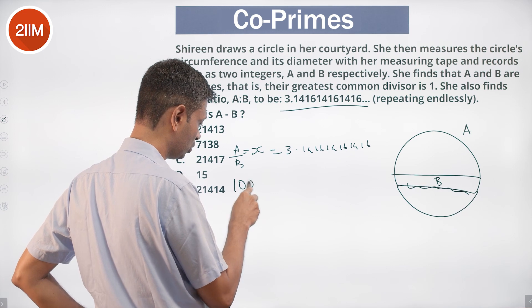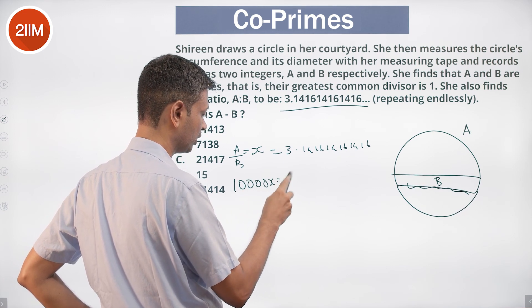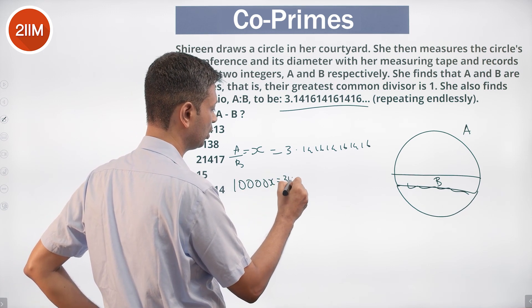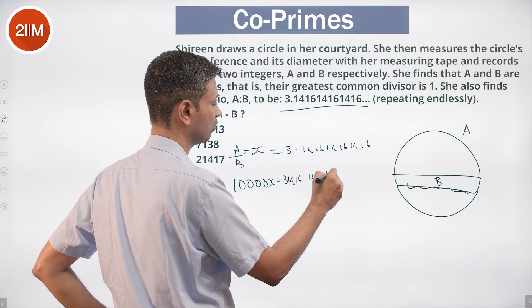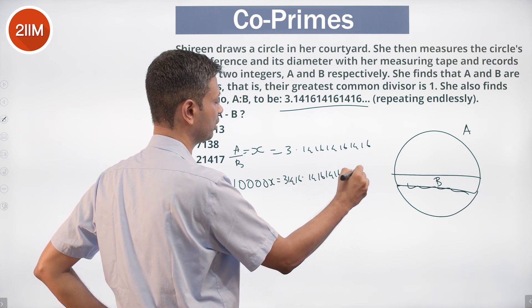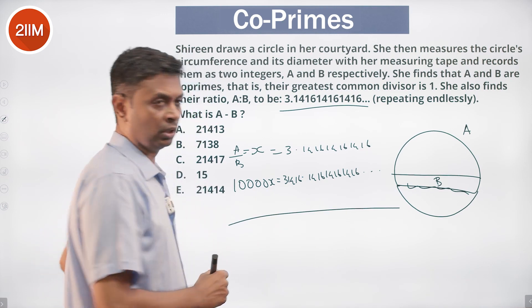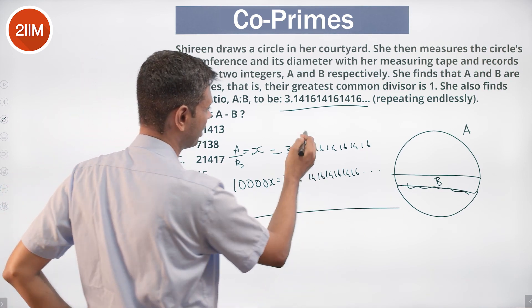So if I have 10000X, that will be equal to 31416.141614161416... and so on. I subtract one from the other, this part completely disappears.